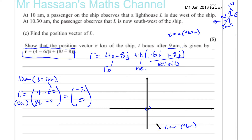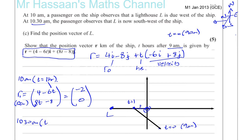At t equals 1 hour, the ship is exactly due west of the origin — at minus 2i, level with the origin. At 10 a.m. the lighthouse L is due west of the ship, so the lighthouse is somewhere further west along that same horizontal line. We don't know exactly where yet. At 10:30 a.m. — which is half an hour later, so t equals 1.5 hours — we get the second observation.